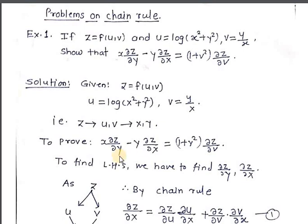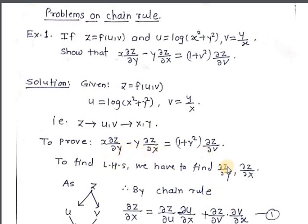Next, what do we have to prove? We have to find the value of the expression x ∂z/∂y minus y ∂z/∂x. In this LHS expression we need partial derivative of z with respect to x and partial derivative of z with respect to y. Since z is a composite function of x and y, we use the chain rule.